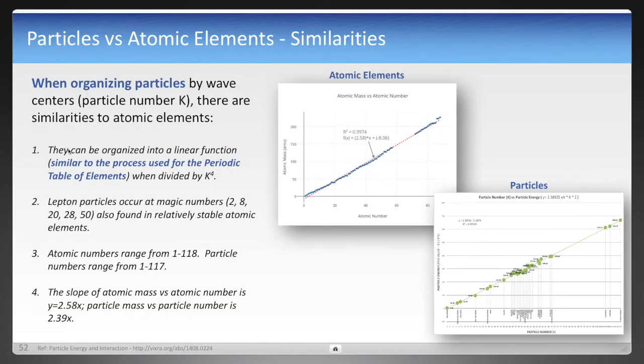All right, here's another thing that's cool. Now, atomic elements, which we referred to earlier, there was one coincidence, which was lepton particles occur at magic numbers. There's another coincidence, which is the largest currently known particle, the Higgs boson, is calculated with a wave center count of 117. What makes that interesting is that the periodic table of elements has 118 protons in the atomic nucleus. But I think the most amazing thing, which is a lot more than a coincidence, is when you map atomic mass to atomic number, that's the proton count, you end up with a linear function.